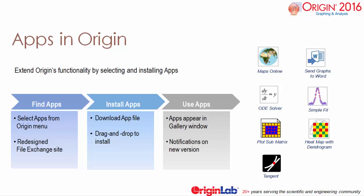One of the most significant new features of Origin 2016 is the introduction of apps, extending Origin's graphing and analysis capabilities. Apps are now listed in the tool menu and can be downloaded and installed with a simple drag-and-drop. Origin will notify you whenever a new app, or version of an installed app, becomes available.